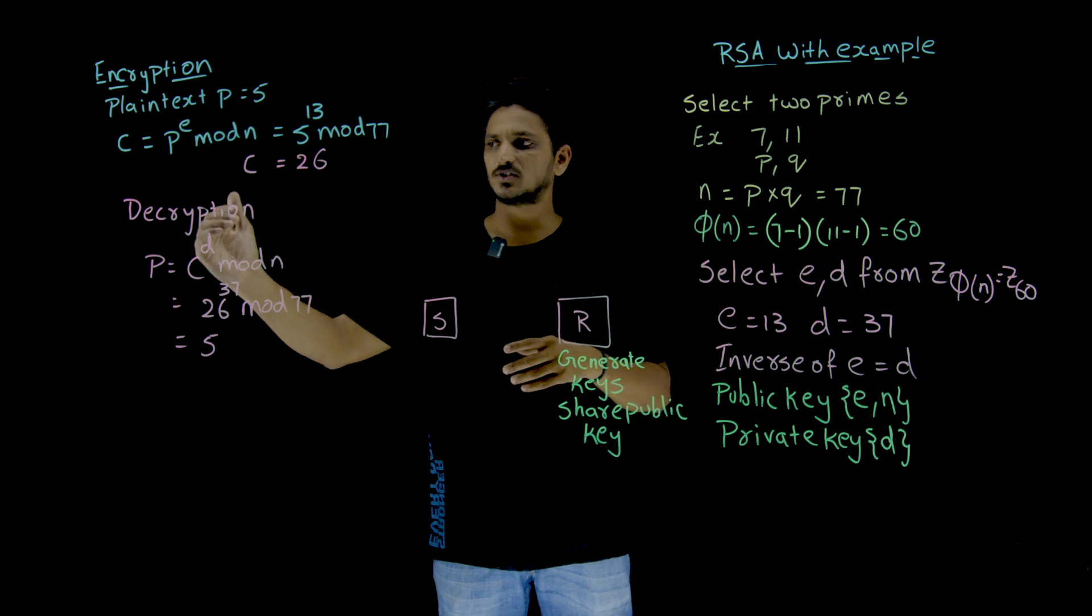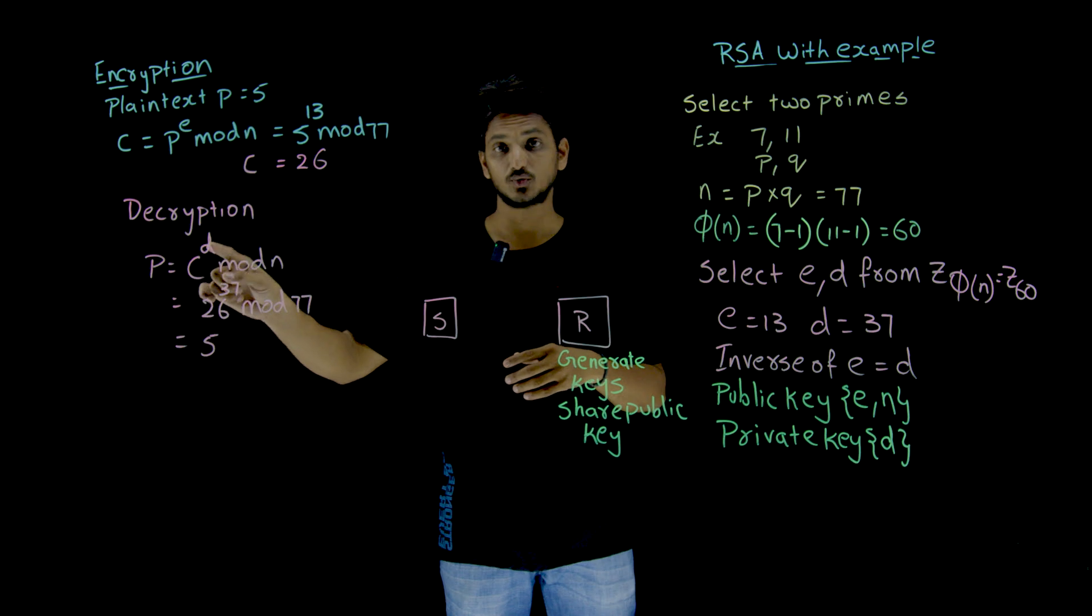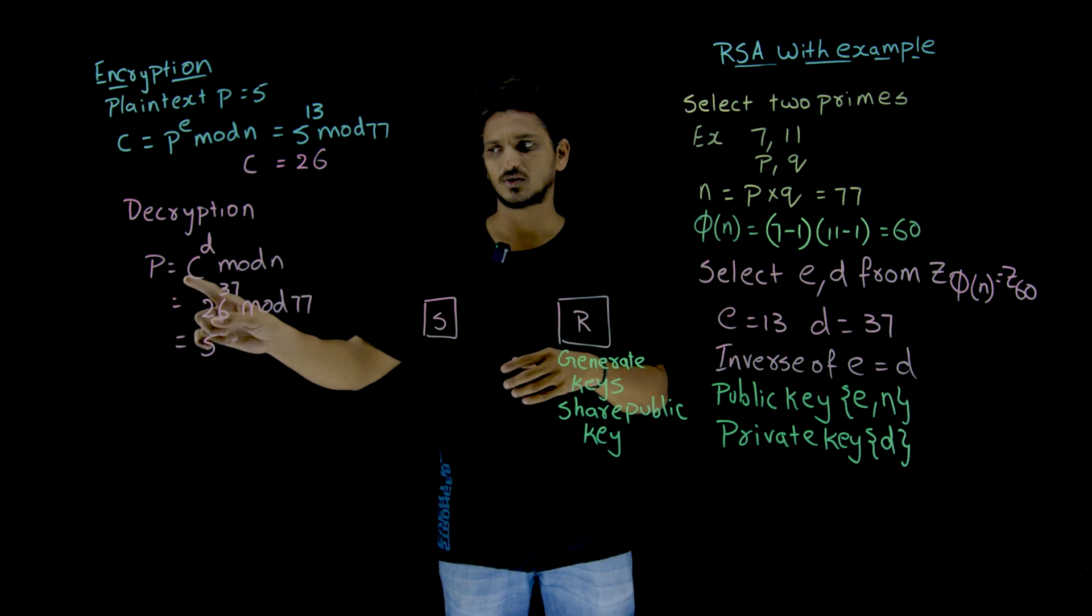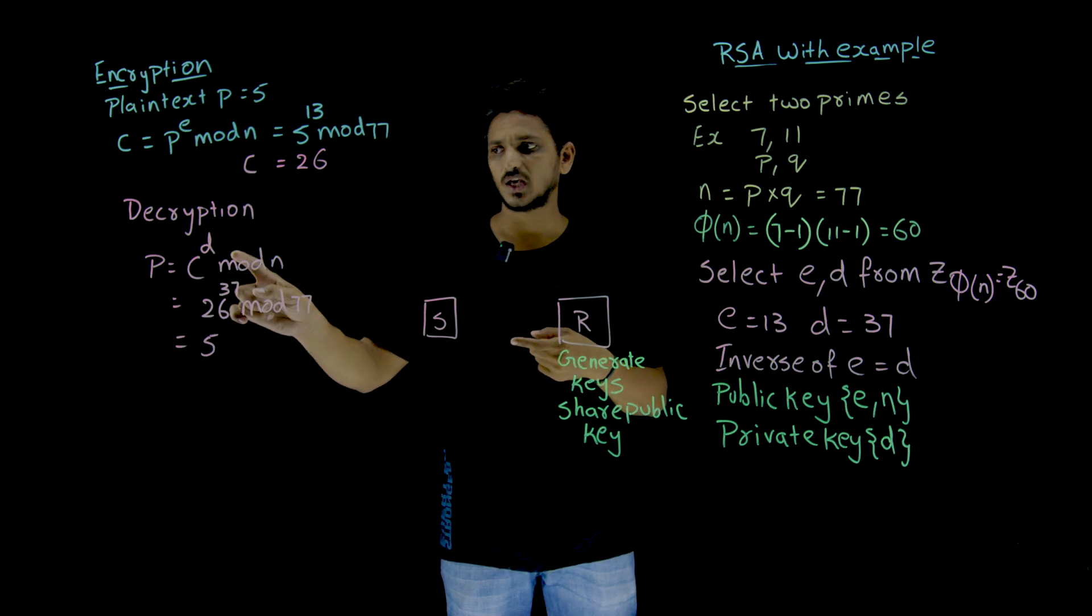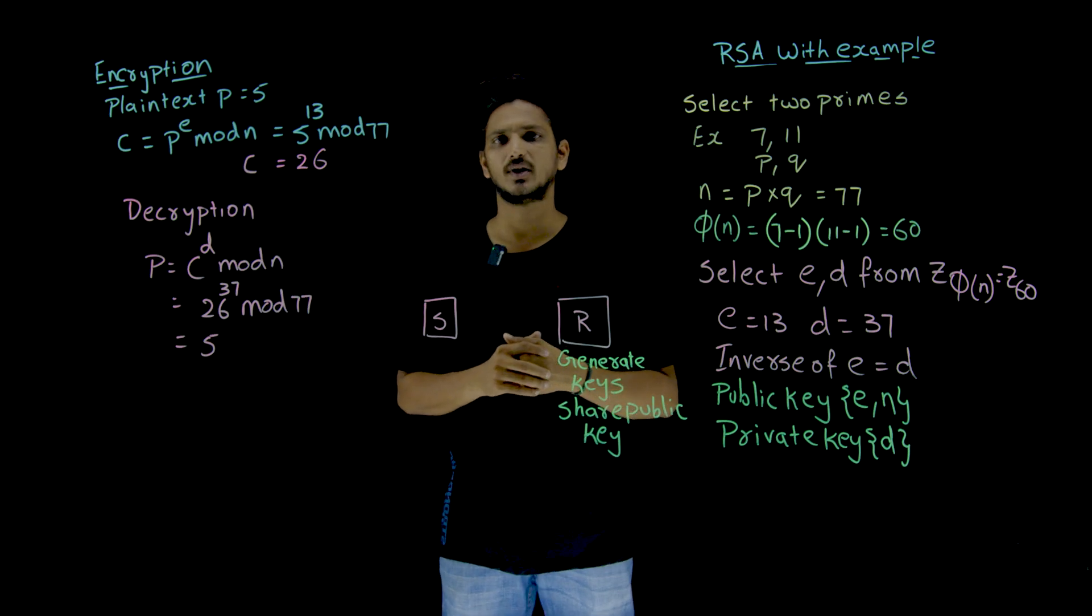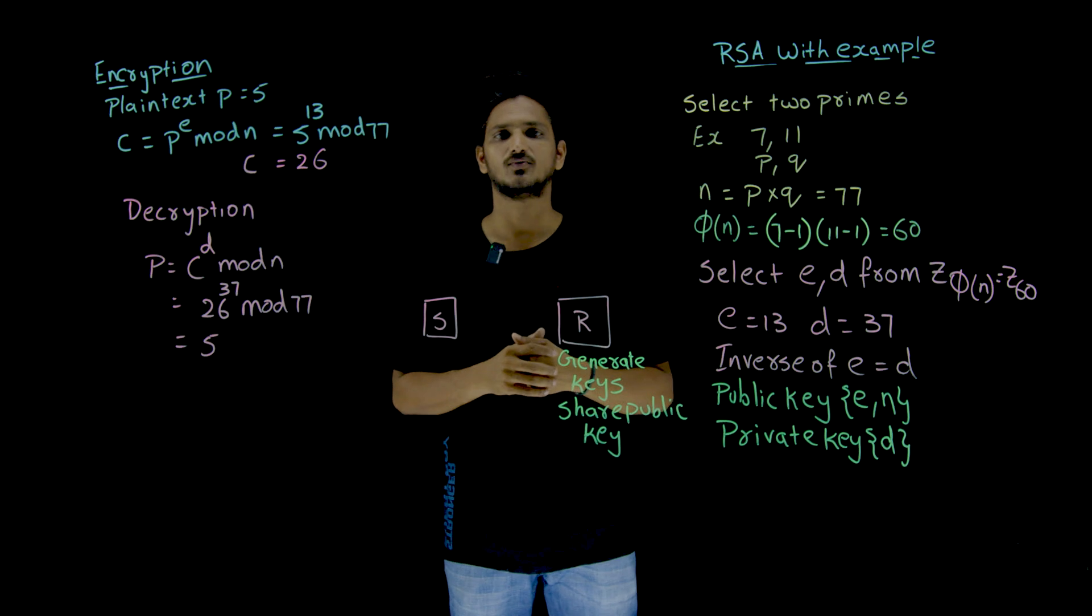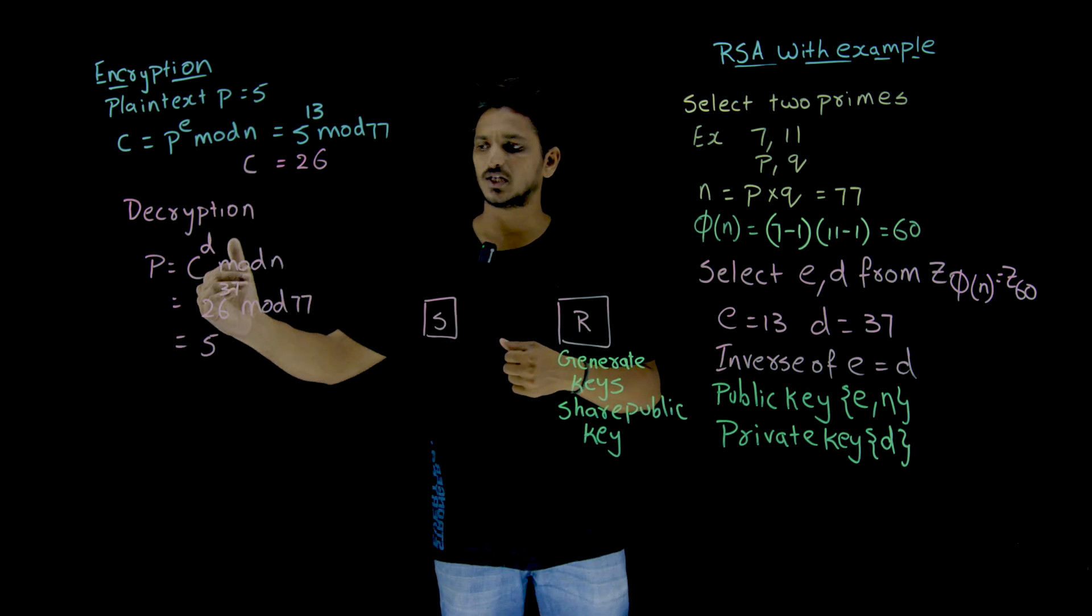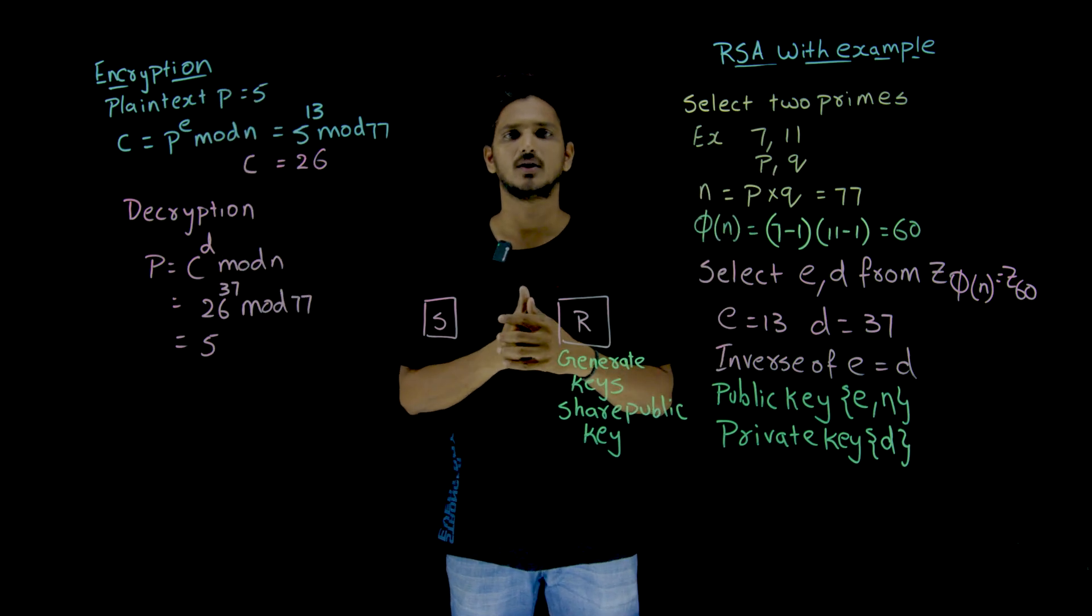So once this ciphertext reaches the destination, he has to do the decryption to identify the plaintext. Plaintext equals C^D. He is going to use the private key. By using this private key mod n, he is going to generate the plaintext. 26^37 mod 77, which we got as 5. So during the decryption, you got the plaintext.